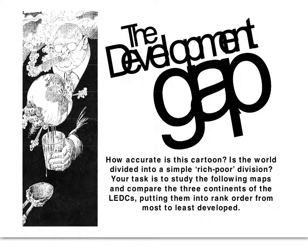According to the GCSE spec, we have to identify and describe differences in development between LEDCs and MEDCs using economic and social indicators of development. We also have to do this with reference to places for illustration purposes, and we have to assess the effectiveness of social and economic indicators. That's quite a lot to do, so we're going to cover all of that here.